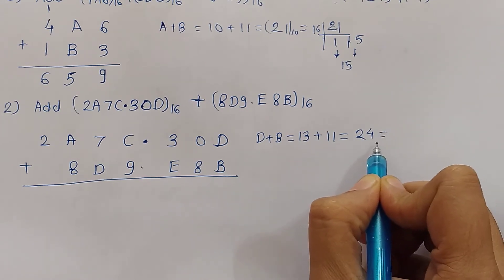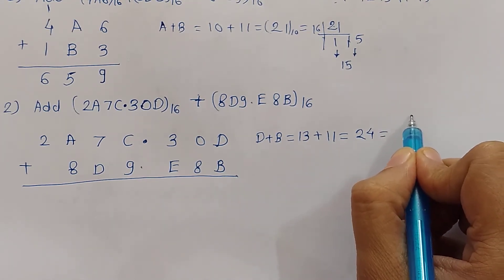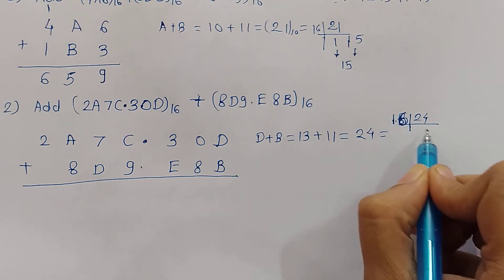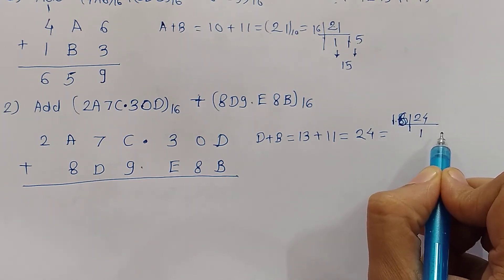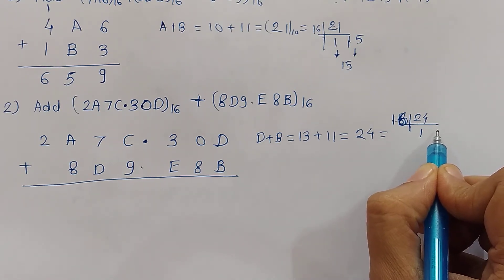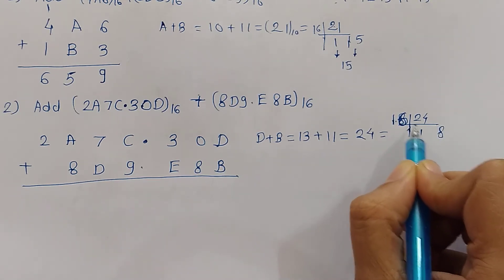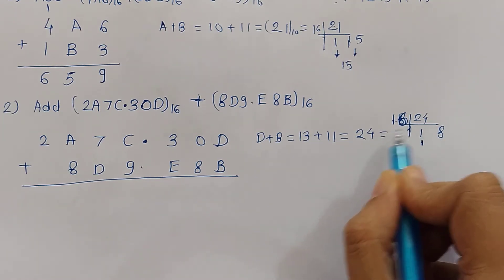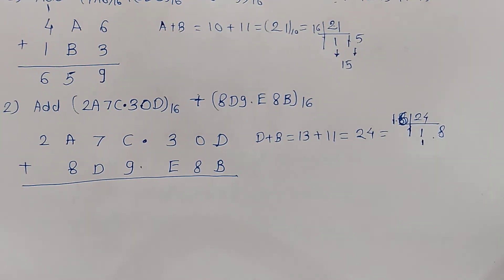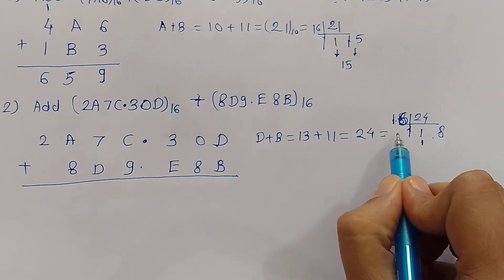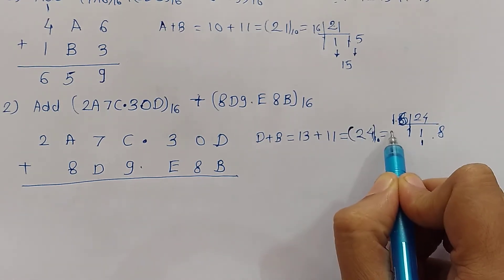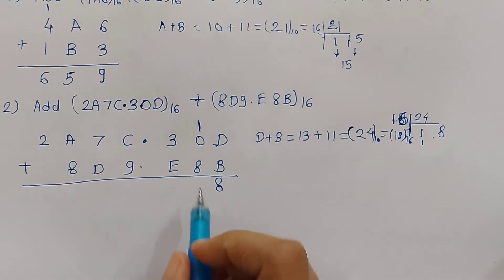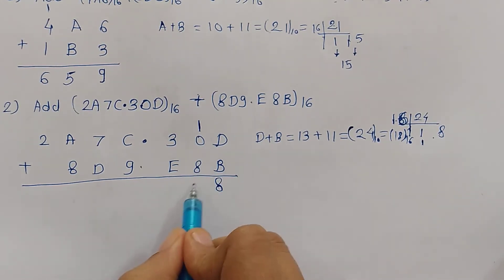Now 24 is decimal and we need to convert it to hexadecimal. We divide 24 by 16: 16 ones are 16, and 8 remains. So the decimal-to-hexadecimal conversion of 24 is 18. We write 8 and carry 1 to the next digit position. Now 0 plus 8 plus 1 is 9, so we write 9.